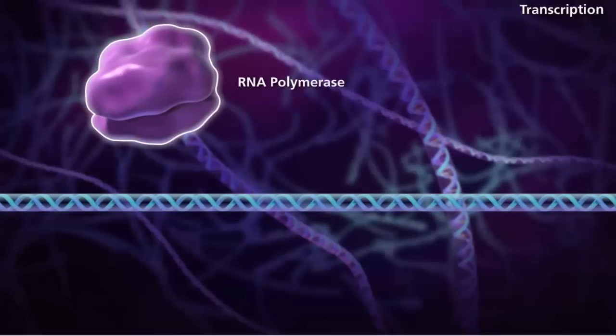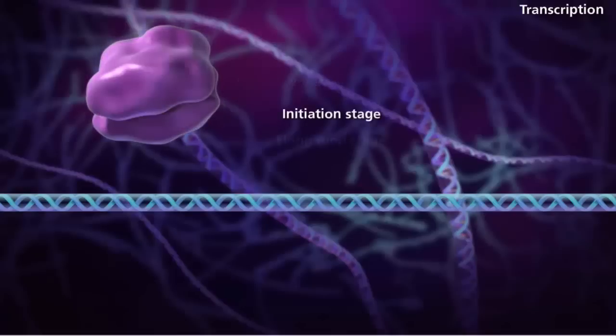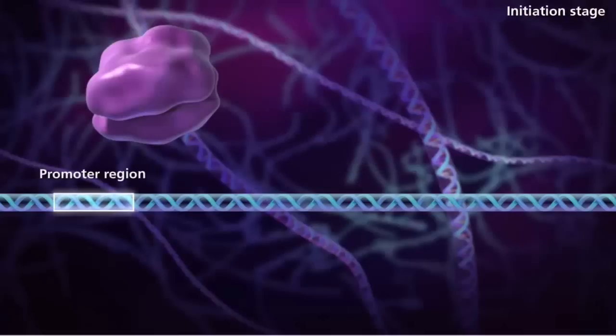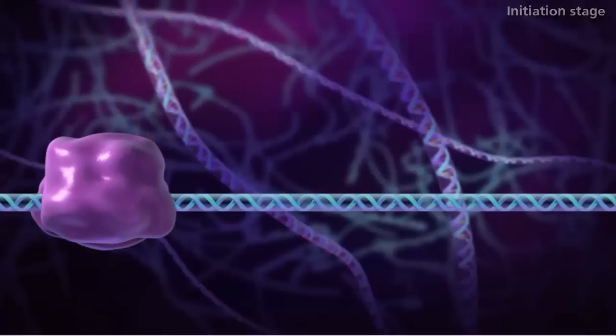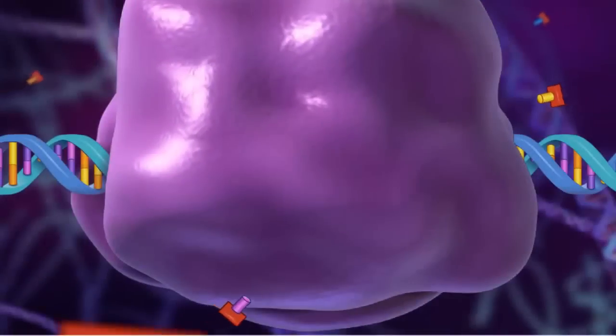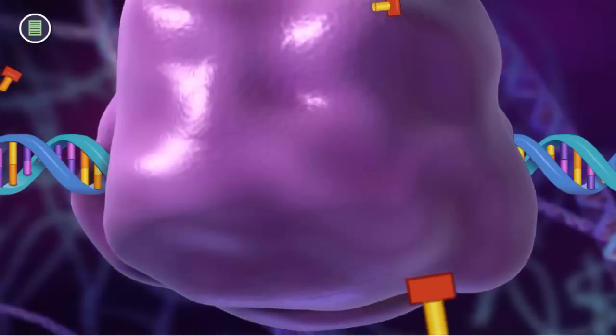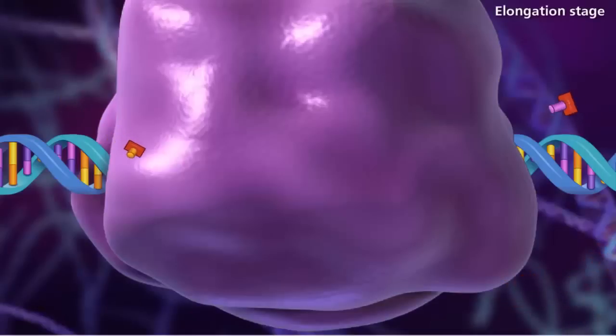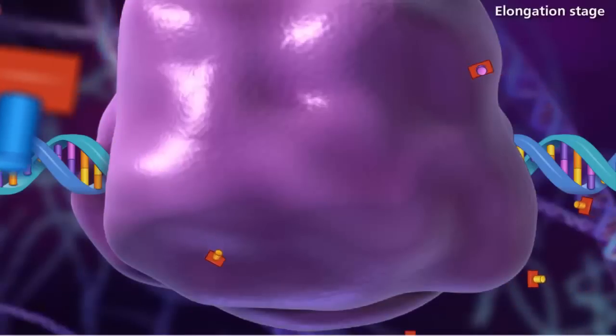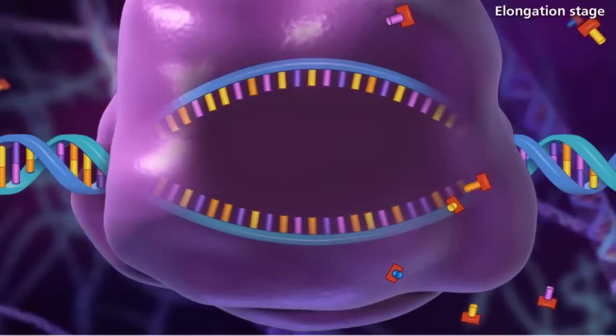During initiation, the promoter region of the gene functions as a recognition site for RNA polymerase to bind. This is where the majority of gene expression is controlled by either permitting or blocking access to this site. RNA polymerase binding causes the DNA double helix to unwind and open.